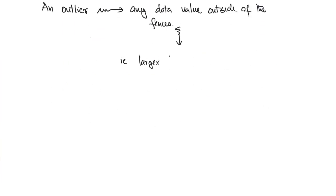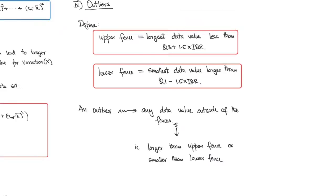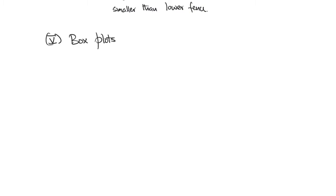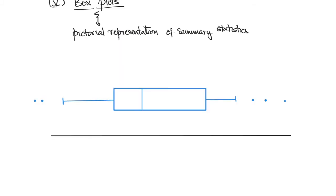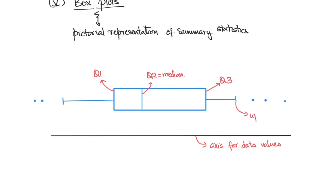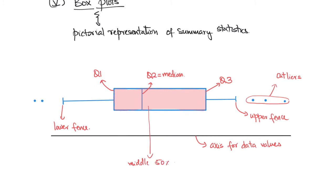That is, a data value that is either larger than the upper fence or smaller than the lower fence. We finish up this video by talking about box plots, which provide a very succinct pictorial representation of summary statistics corresponding to a quantitative data set. A box plot looks as follows: the black line is the axis for the data values. We then identify the third quartile, the first quartile, and the median. We have the upper fence, the lower fence, and the outliers, which lie outside of the fences. The red region is the middle 50% of the data, and the length of the rectangle is the interquartile range.